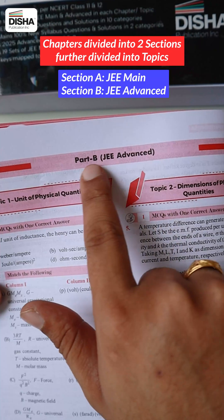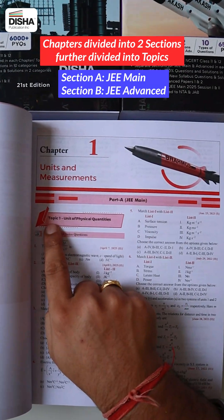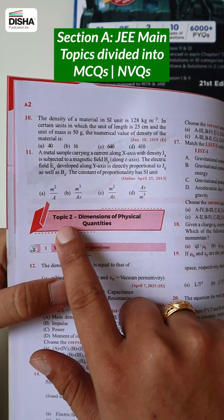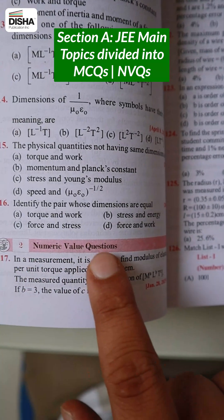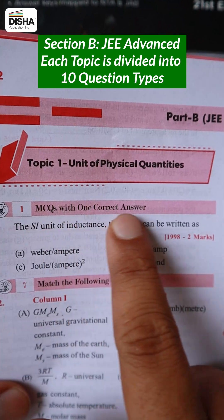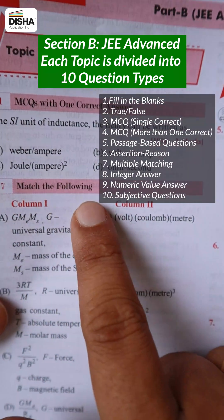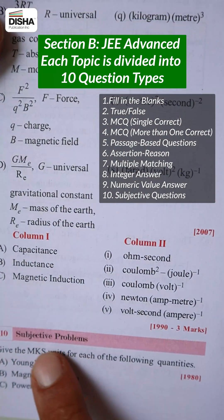Each chapter of these books is divided into two sections which are further divided into topics. Section A: J.E. Main, each topic is further divided into MCQs and NVQs. Section B: J.E. Advanced, each topic is divided into 10 question types from fill-in-the-blanks to subjective questions.